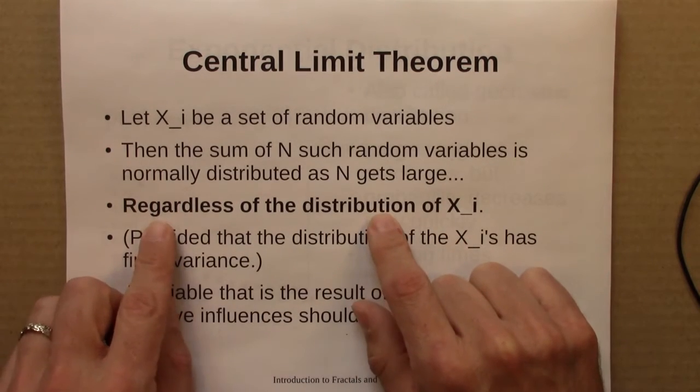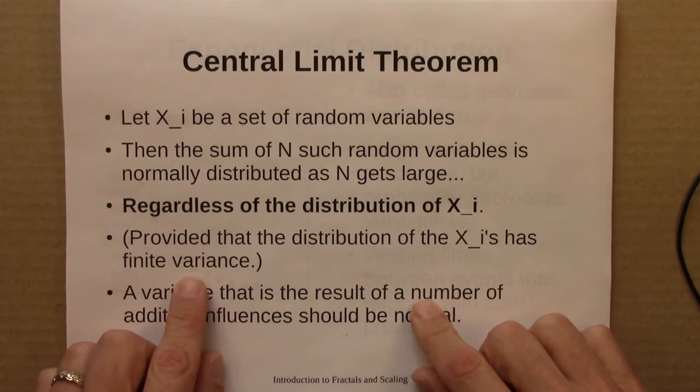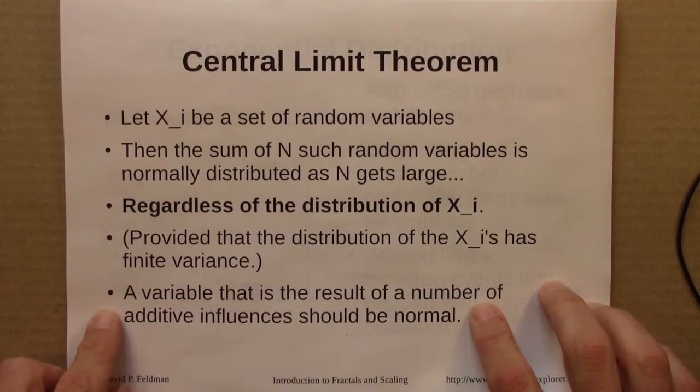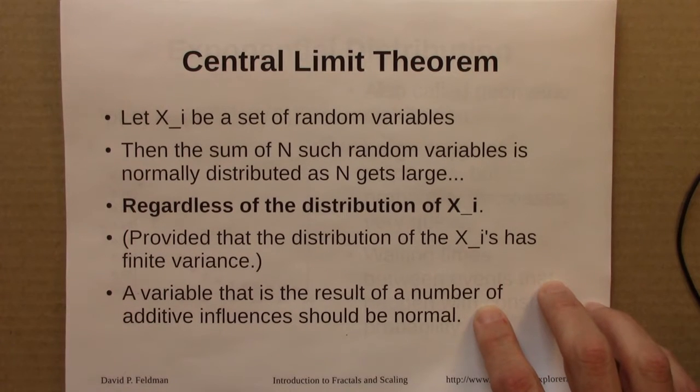That regardless of the distribution, provided that the variance is finite, we're going to see a normal distribution out of this. So the intuition to take away from this is that normal distributions, we would expect them to be common. Any variable we see that is itself the result of a number of additive influences, a bunch of things that add together to produce a certain outcome, we would typically expect that to be normal.